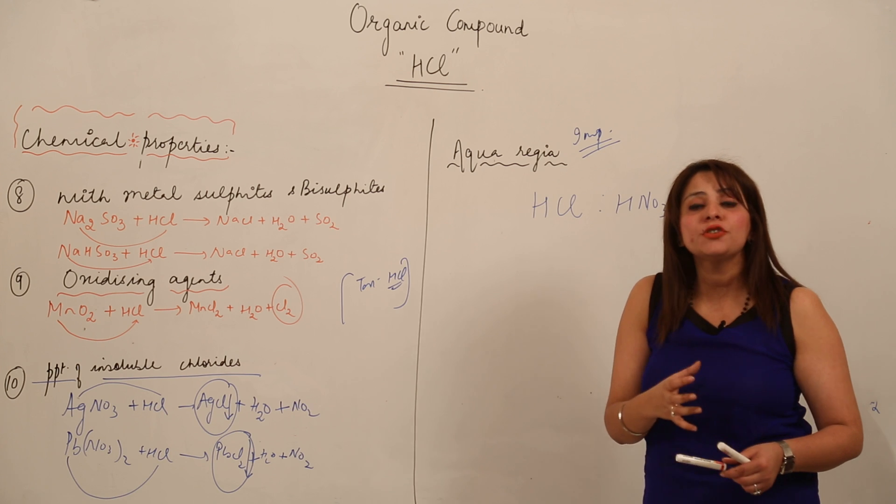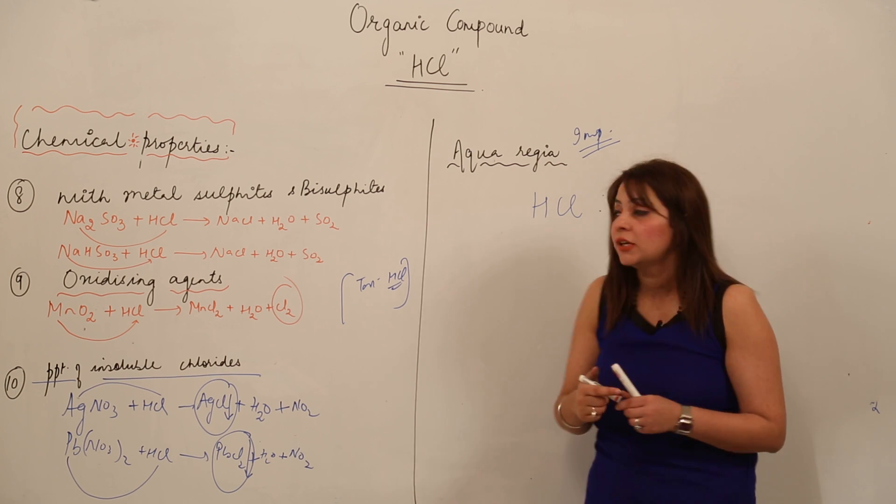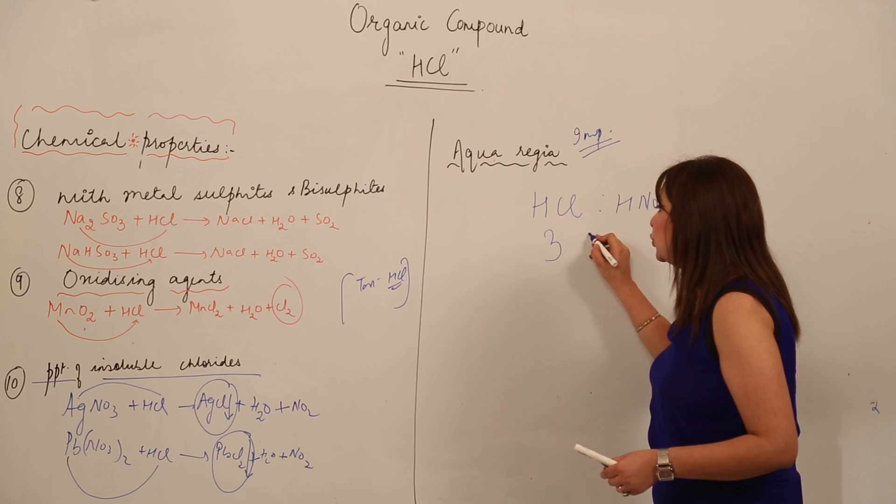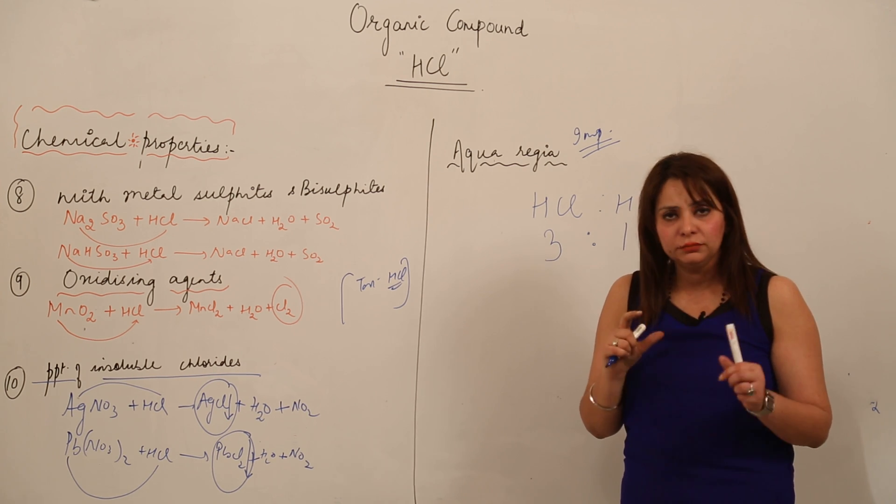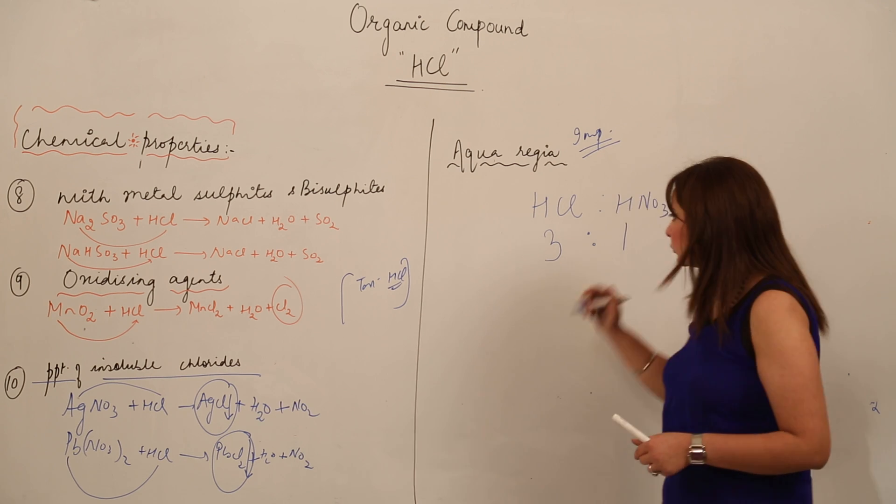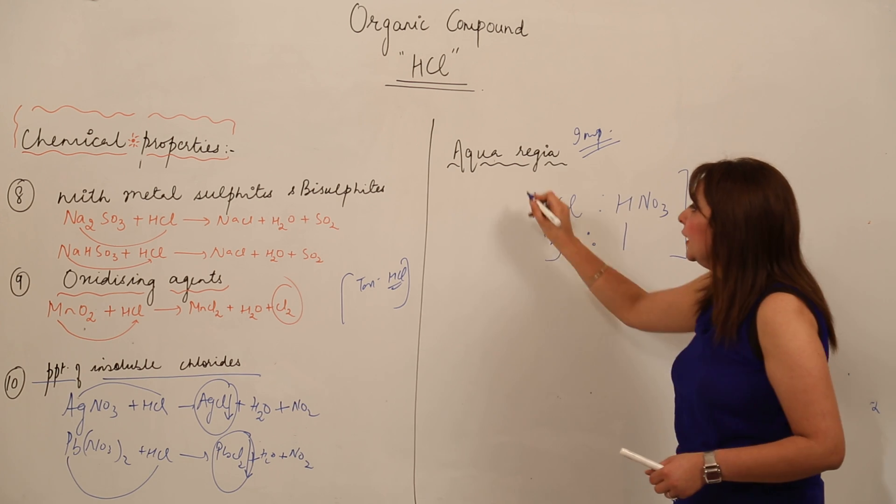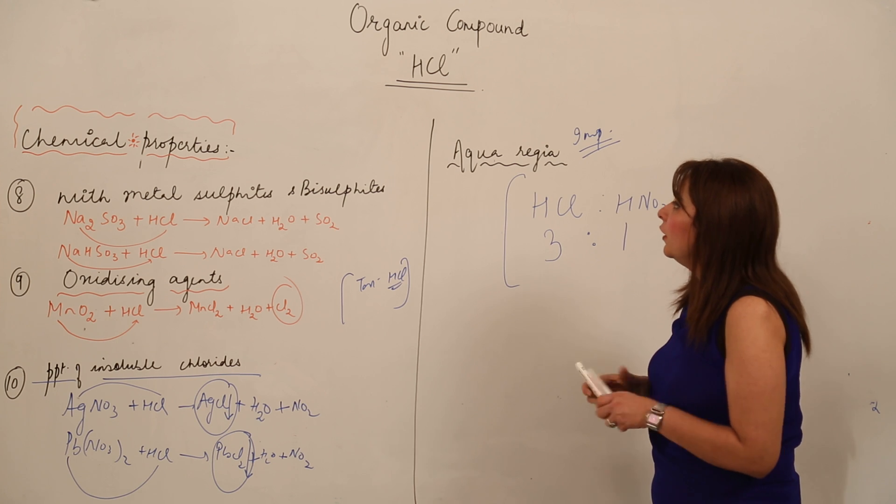The composition or ratio of volume is fixed. HCl is taken in 3 ratio and HNO3 in 1 ratio. The volume ratio is 3 to 1. When we mix them, it forms aqua regia.